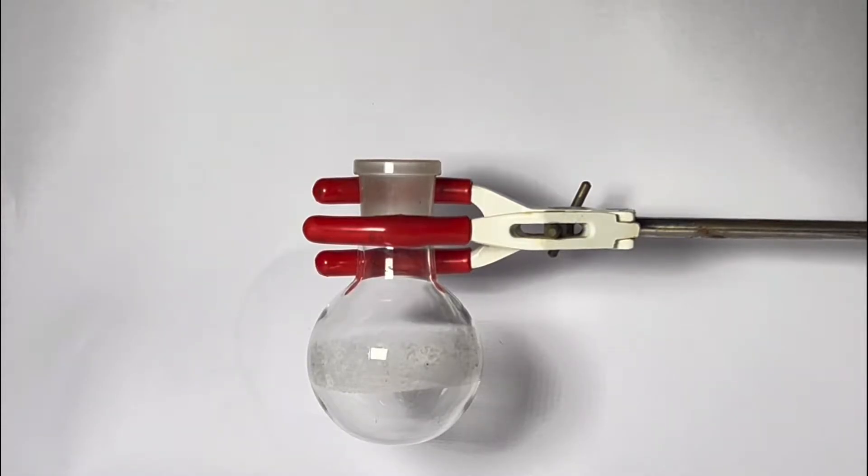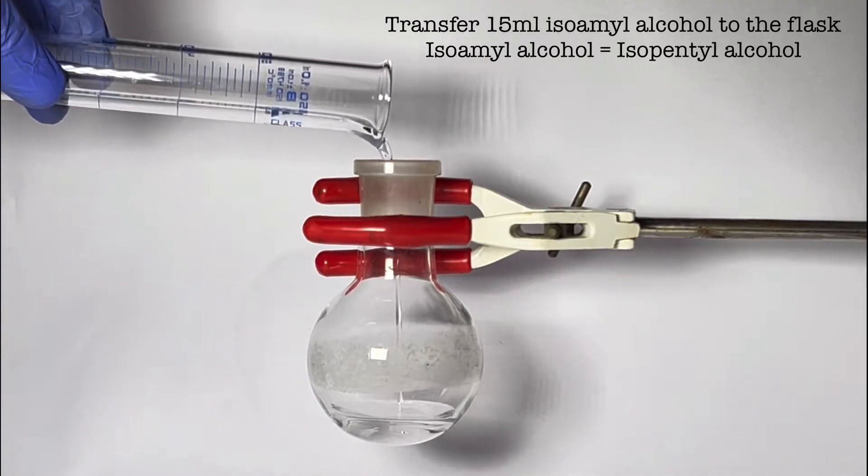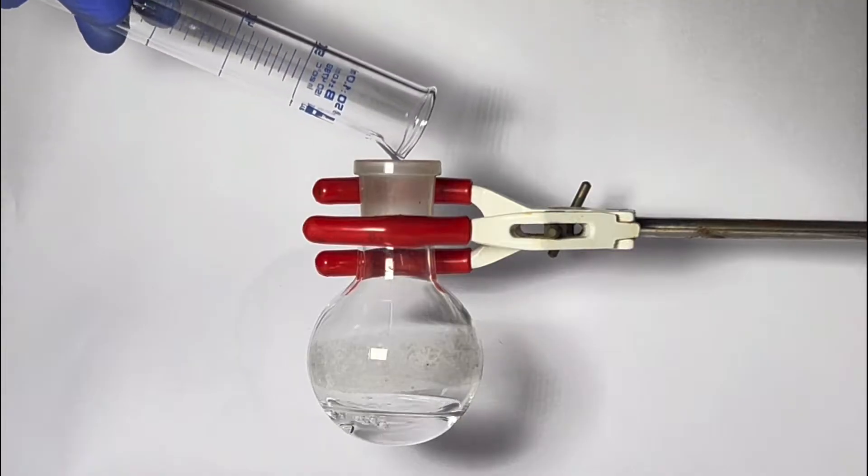Start by fixing a 100 ml round bottom flask on a stand using a clamp and add 15 ml of isoamyl alcohol to it. It is also called isopentyl alcohol.